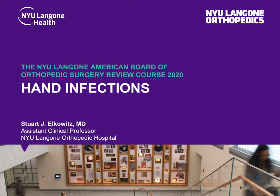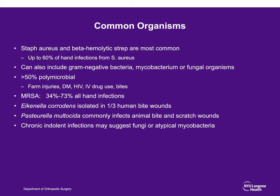This is a review of hand infections. We'll first start with the most common organisms, which is often on many questions. The most common organisms in the hand are Staph aureus as well as beta-hemolytic strep. Up to 60% of hand infections are Staph aureus.